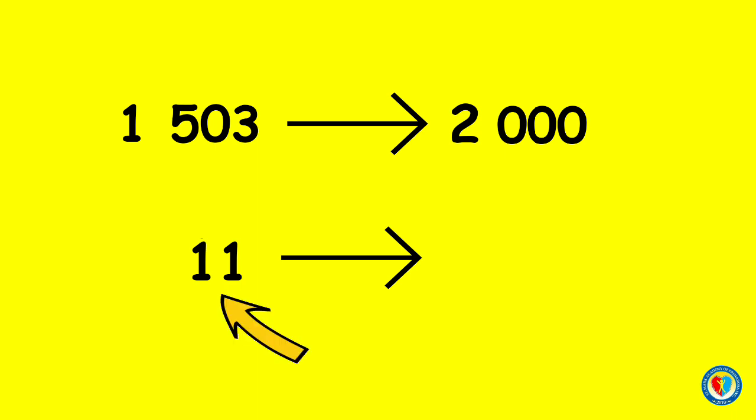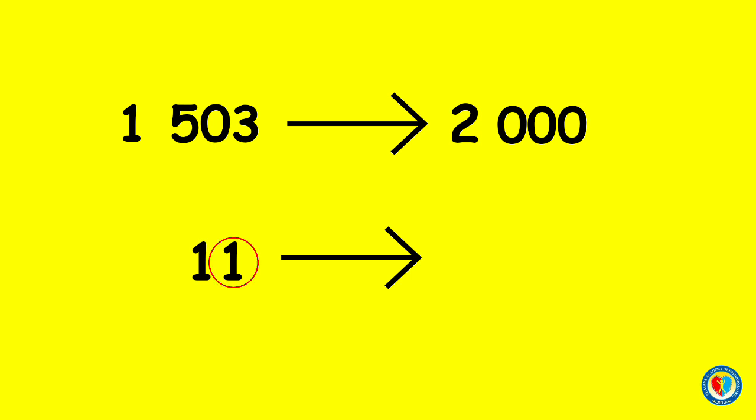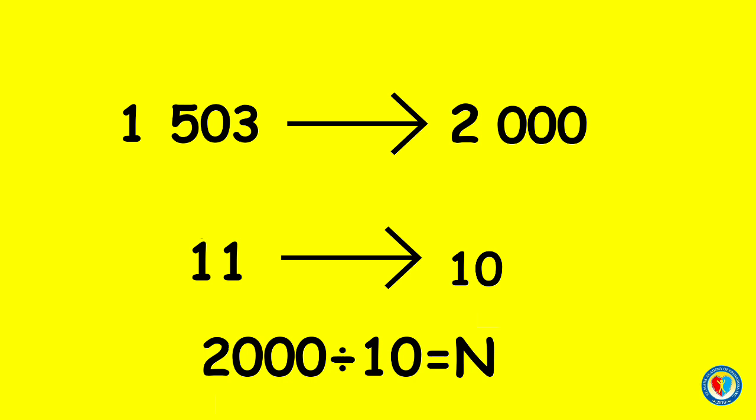11 is rounded up to the nearest tens. Look at the digit to its right. The digit is 1, which is less than 5. Therefore, 11 is rounded down to 10. Hence, the estimated quotient is equal to 2,000 divided by 10.